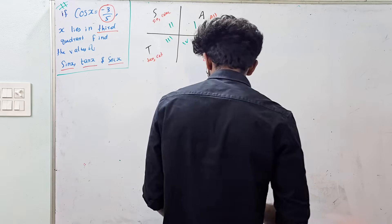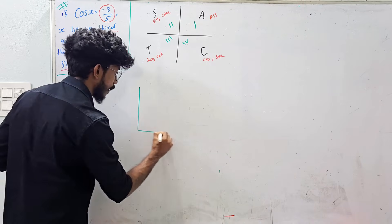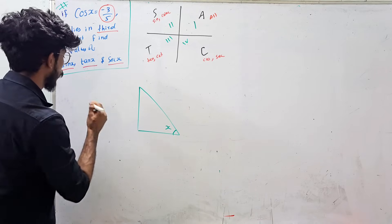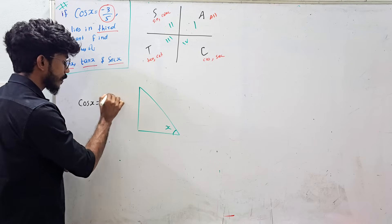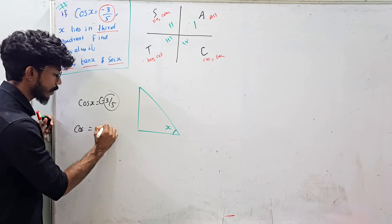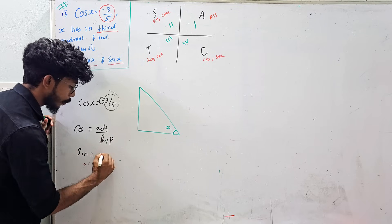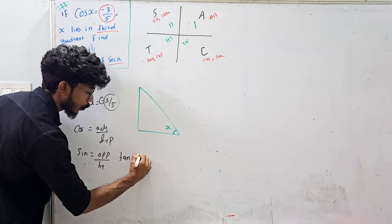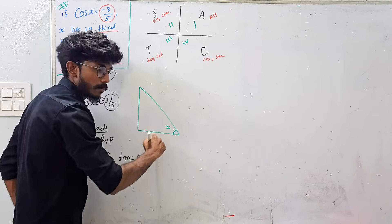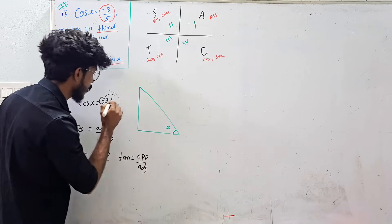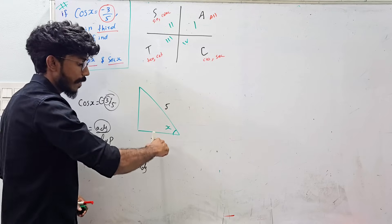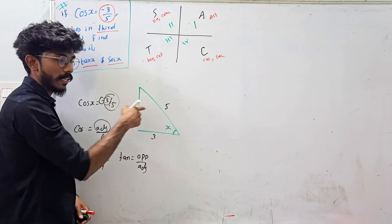Draw a right triangle. Given cos x equals minus 3 by 5. We know cos equals adjacent by hypotenuse. So adjacent is 3 and hypotenuse is 5. We need to find the opposite side using Pythagoras.